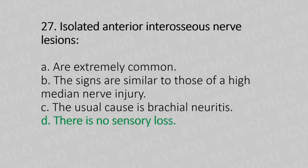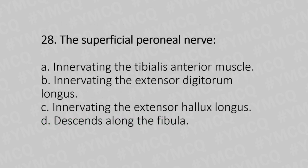Now let's move to question number 28. The superficial peroneal nerve. Option A: innervates the tibialis anterior muscle. Option B: innervates the extensor digitorum longus. Option C: innervates extensor hallucis longus. Option D: descends along the fibula. And the answer is Option D, descends along the fibula.